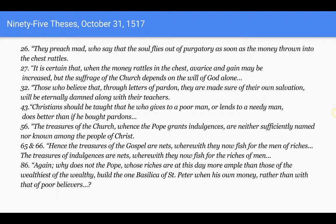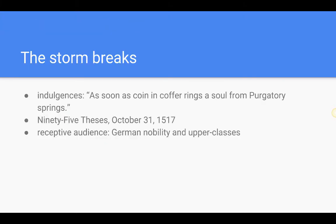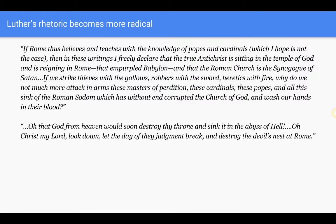Now Luther's own rhetoric against the church was becoming much more radical. According to Martin Luther: 'If Rome thus believes and teaches with the knowledge of popes and cardinals, which I hope is not the case, then in these writings I freely declare that the true Antichrist is sitting in the temple of God and is reigning in Rome, that impurpled Babylon, and that the Roman church is a synagogue of Satan. And if we strike thieves with the gallows, robbers with the sword, heretics with fire, why do we not much more attack in arms these masters of perdition — these cardinals, these popes, and all the sink of the Roman Sodom, which has without end corrupted the church of God?'